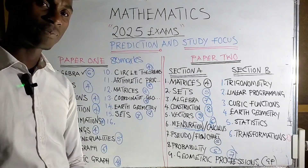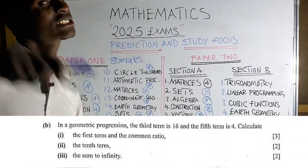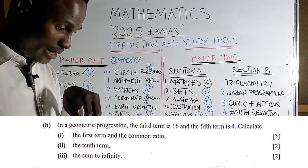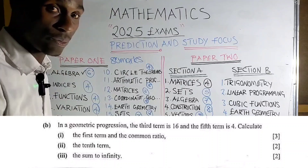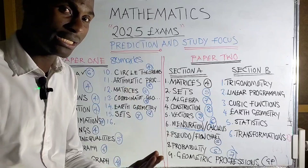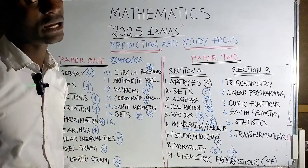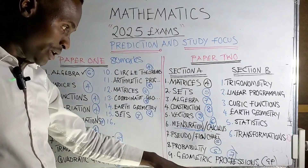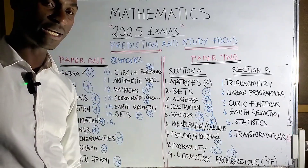The third GP scenario: you are given non-consecutive terms — for example, the third term and the sixteenth term. Since these are not consecutive, you cannot directly find the common ratio. There is a method to calculate this, and you need to know it. If you know all three scenarios, you can mark yourself among the confident students because you now know how to fully calculate geometric progression.